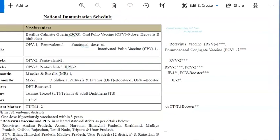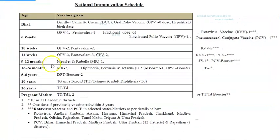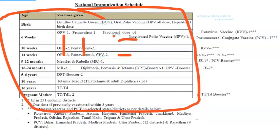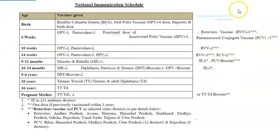National Immunization Schedule: at birth give BCG, oral polio, and hepatitis B. At 6, 10, and 14 weeks give oral polio, pentavalent vaccine, and fractional-dose IPV (inactivated polio vaccine) at 6 and 14 weeks only. At 9 to 12 months give measles-rubella, etc. The vaccines listed for endemic areas only — rota, pneumococcal, Japanese encephalitis — are given only where that disease is a problem.